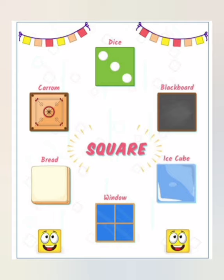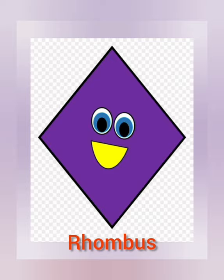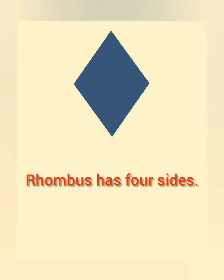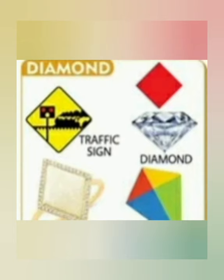Here is rhombus — R-H-O-M-B-U-S, rhombus. This rhombus has four sides. The nimki that you eat is most relatable to a rhombus. Some people also call rhombus a diamond shape. Some examples are: kite that flies in the sky, ring that people wear on their finger, diamond, traffic sign, and fish — all these have the shape of a rhombus.